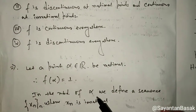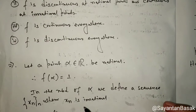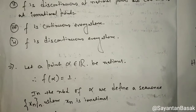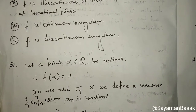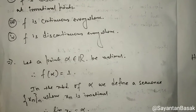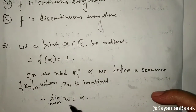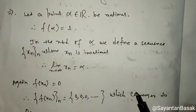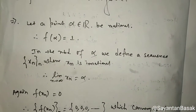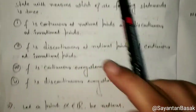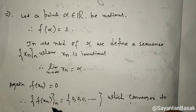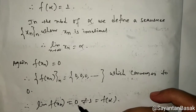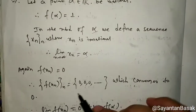In the neighborhood of alpha, we define a sequence x_n where x_n is irrational, converging to alpha as n tends to infinity. So f(x_n) is equal to 0, which is not equal to f(alpha) which equals 1.